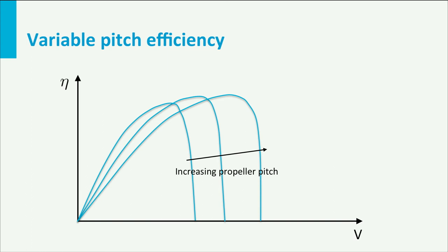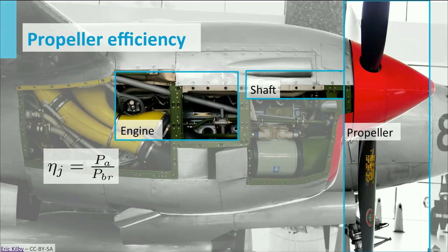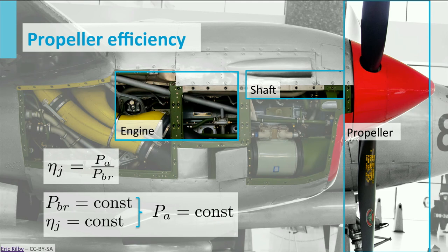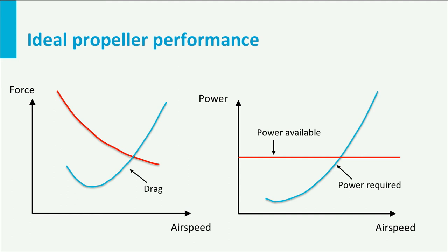If we assume that the engine delivers a constant shaft power, for example by means of a conventional piston engine, then the propulsive efficiency used for jet engines can be replaced by the propeller efficiency, defined as the power available divided by the shaft power. If the shaft power is constant and efficiency is kept constant by varying blade pitch, then power available will be constant as well. This means that power available is independent of flight speed for a given flight altitude and throttle setting. Consequently, the thrust decreases with a 1 over x shape with increasing flight speed. This is of course theoretical behavior, because it also implies that at zero velocity thrust will be infinite.